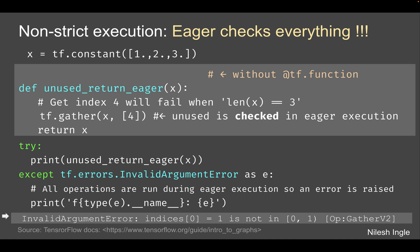Now here we have an example of non-strict execution. In eager execution, Python goes line by line, reads every line, runs it, and if there is an error it will throw an error. However, when we run a graph, the non-essential parts are not included in the graph, so you might see that it doesn't throw an error. For example, here we have a constant x which is a one-dimensional, rank-one tensor.